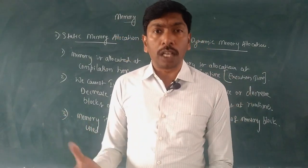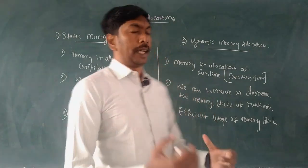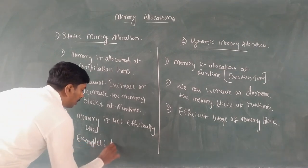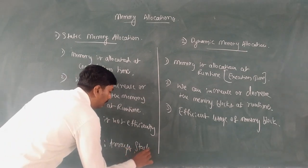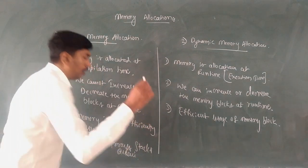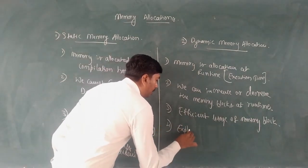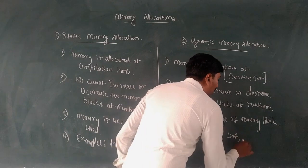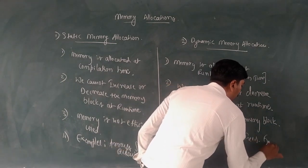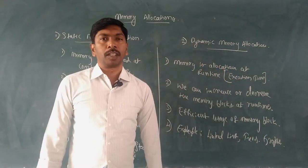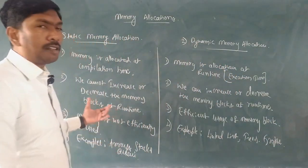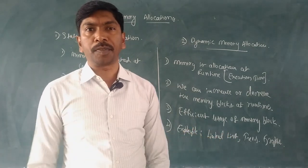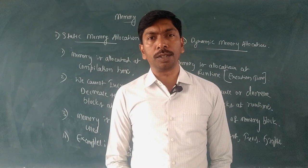In static memory allocation, sometimes there is maximum allocation or shortage - for example, arrays, stacks, and queues. In dynamic memory allocation, examples are linked list, trees, and graphs. Static memory allocation leads to wastage of memory, while dynamic memory allocation enables efficient usage of memory and memory is not wasted.